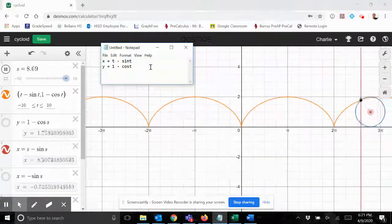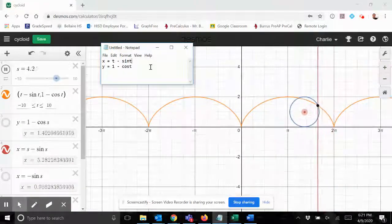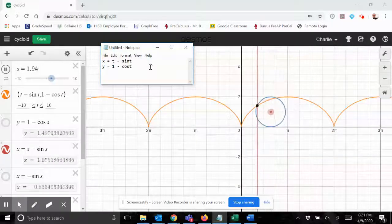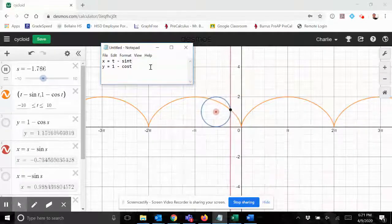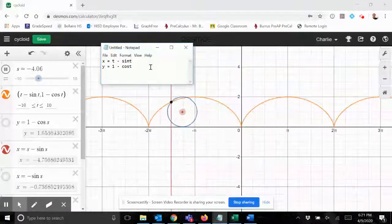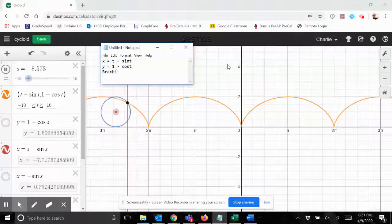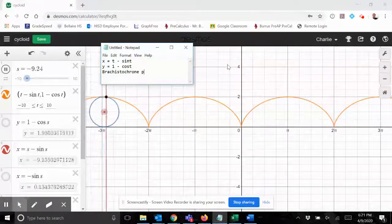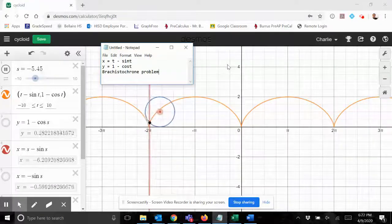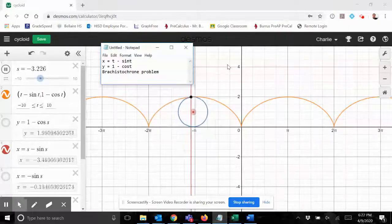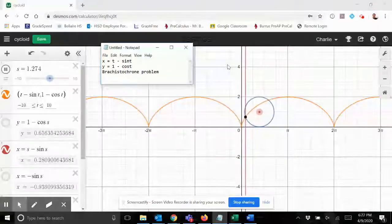The cycloid actually turned out to be the answer of a famous problem that was posed by the Swiss mathematician - let me make sure I got this guy right, I know it's one of the Bernoulli brothers, I believe it was Johan Bernoulli - back in like the 17th century. Johan Bernoulli posed the brachistochrone problem. Look that up because it's a very interesting problem.